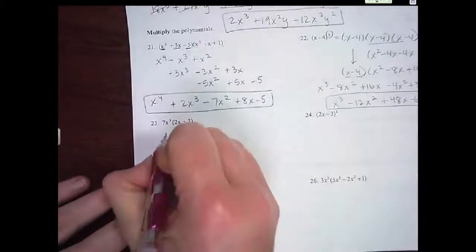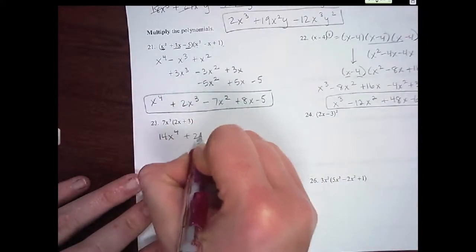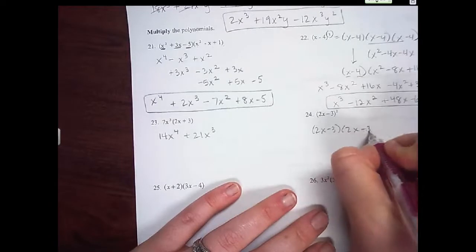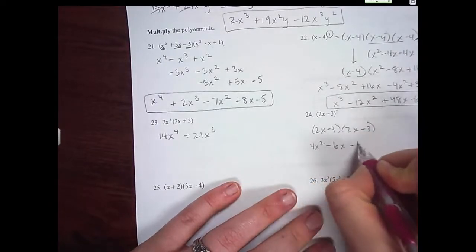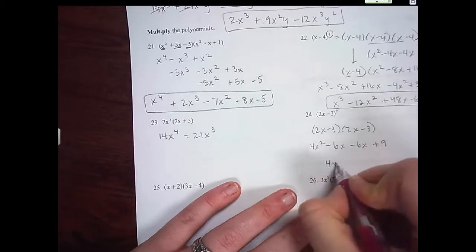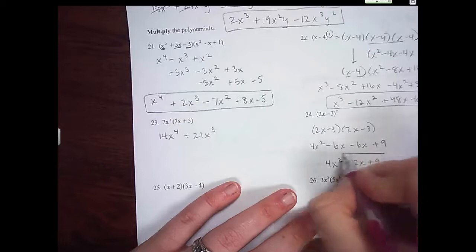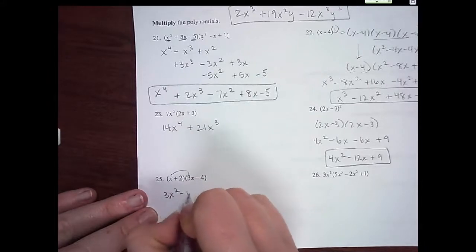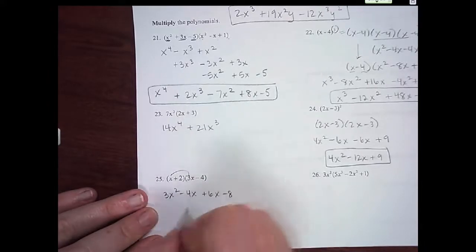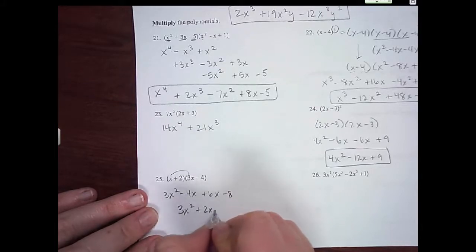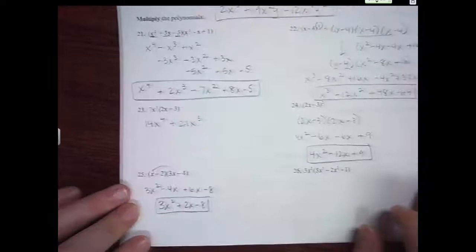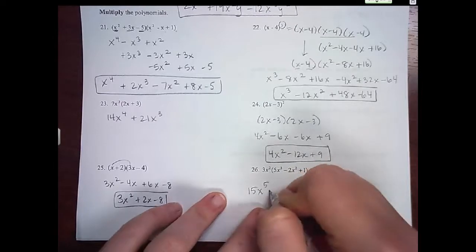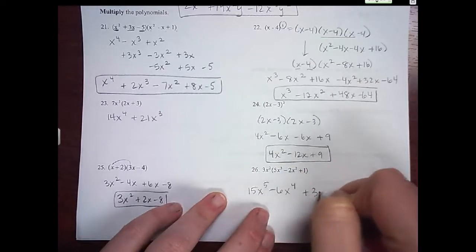23 is just distributing: 14x to the 4th plus 21x³. Number 24: write this out two times and then FOIL. So 4x² minus 6x minus 6x plus 9, which is 4x² minus 12x plus 9. Another FOILing one: 3x² minus 4x plus 6x minus 8, which would be 3x² plus 2x minus 8. And then distribute here: 15x⁵ minus 6x⁵ minus 6x⁴ plus 3x².